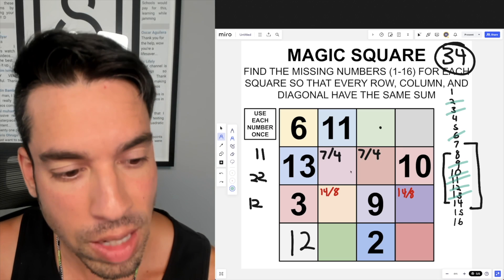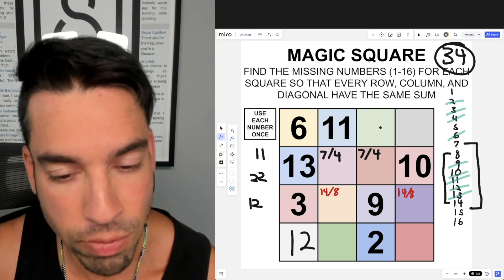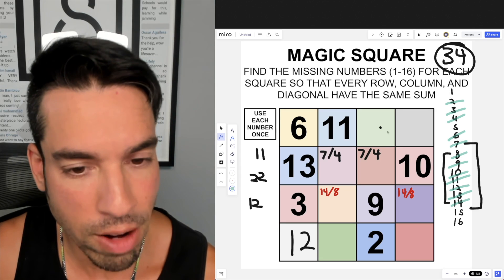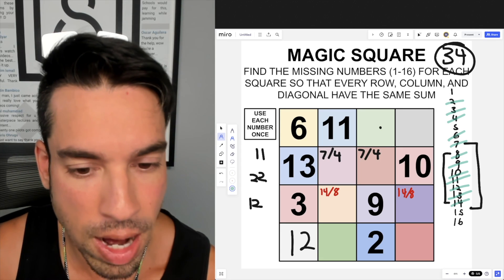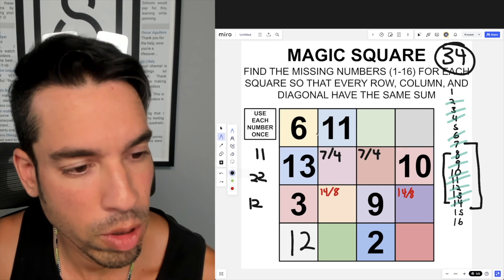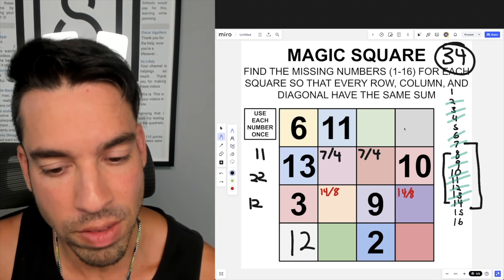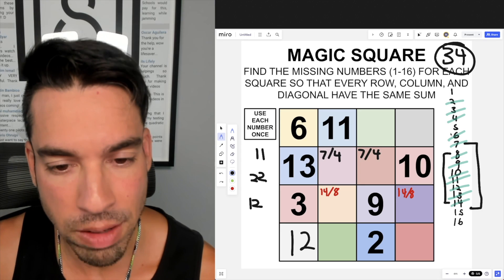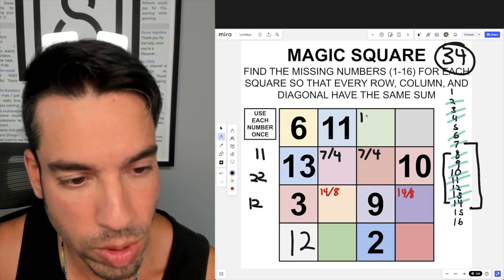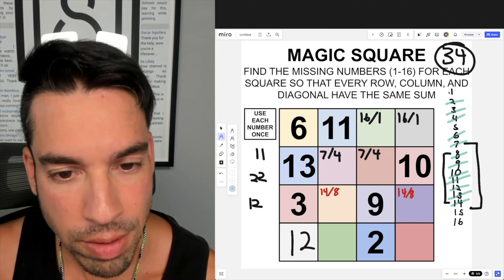As we go, because I have these limited already like so, I'm gonna move 4, 7, 14, and 8. So now the remaining numbers we have for the remaining spots are 1, 5, 15, and 16. So looking at this first row, knowing that we already got 6 and 11, we're gonna need 17 more—17 plus 17 is 34. Of the remaining values, the only thing that's going to give me 17 is 16 and 1. So we know that we got 16 or 1 here, 16 or 1 here.